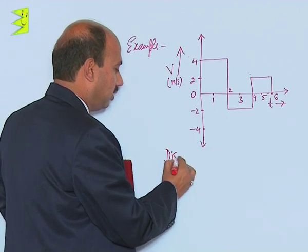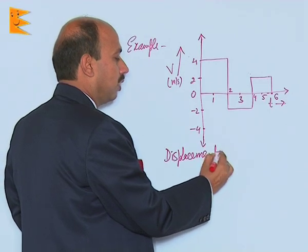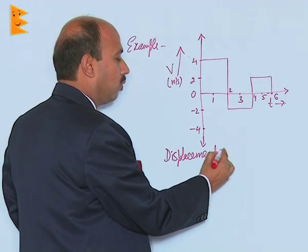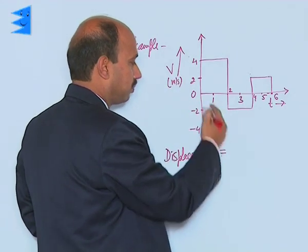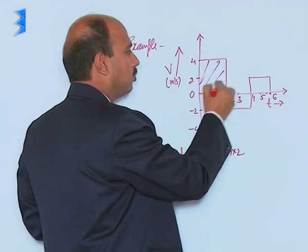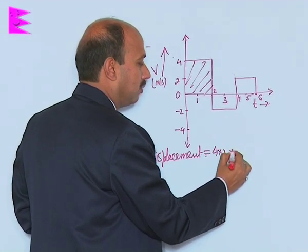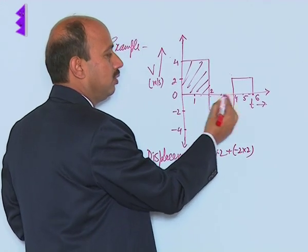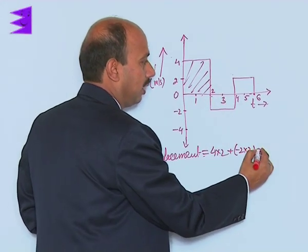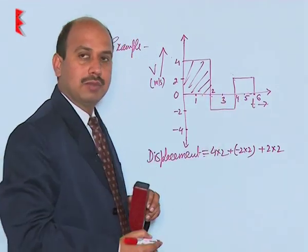Very simple here, the displacement is equal to, as I have told here, area. So here you can write now 4 into 2, that is area of this part. Here we can write plus minus 2 into 2, minus 2 is velocity, 2 is the time interval, then plus 2 into 2, again 2 is velocity, 2 is time interval.